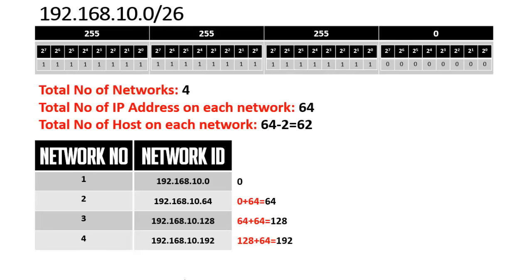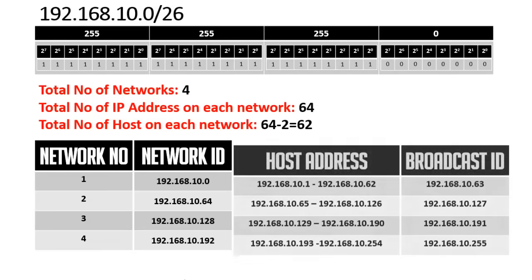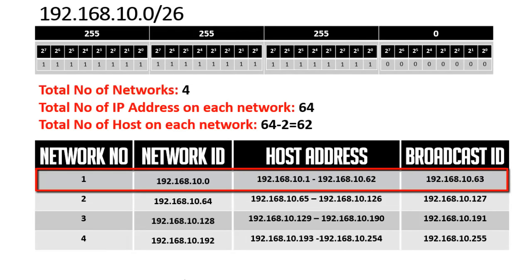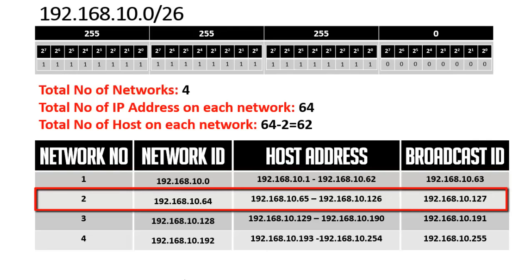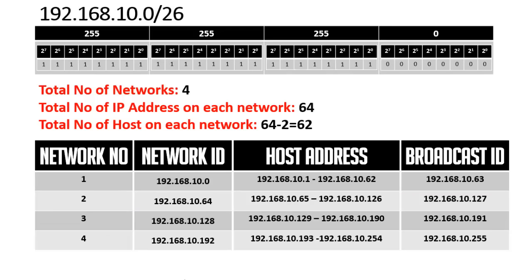For the host and broadcast ranges: Network 1 hosts run from 192.168.10.1 to 192.168.10.62, broadcast is 192.168.10.63. Network 2 hosts run from 192.168.10.65 to 192.168.10.126, broadcast is 192.168.10.127. The same pattern continues for networks 3 and 4. The broadcast address is always the last IP address of each network.